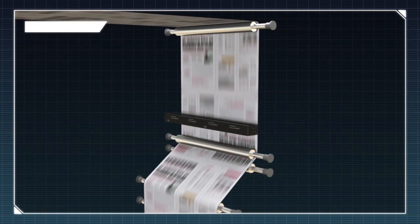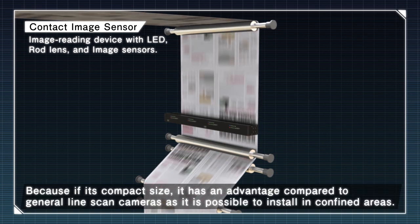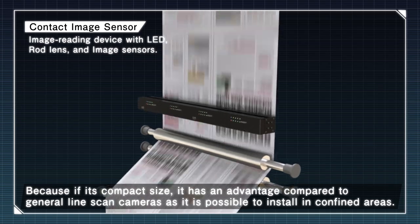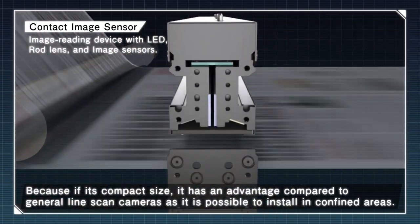The contact image sensor is equipped with LED, rod lens, and image sensors. Because of its compact size, it has an advantage compared to general line scan cameras, as it is possible to install in confined areas.